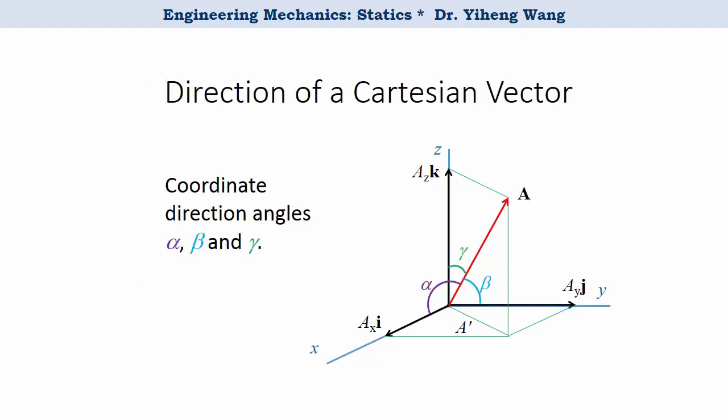To describe the direction of the vector we can use the coordinate direction angles alpha, beta, and gamma. Alpha is defined as the angle between the vector and x axis, and similarly beta and gamma are angles between the vector and the y and z axis respectively.